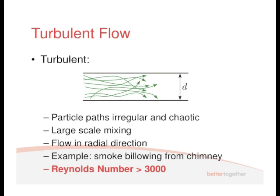So you've got flow in the radial direction, which means in the perpendicular direction to the direction of the pipe. And the example of that is smoke billowing out of a chimney. You've got smoke coming out of a chimney and often it interacts with the air around it and you end up getting turbulent flow. So it's not a nice streamline going straight upwards. You've got all sorts of eddies going on.